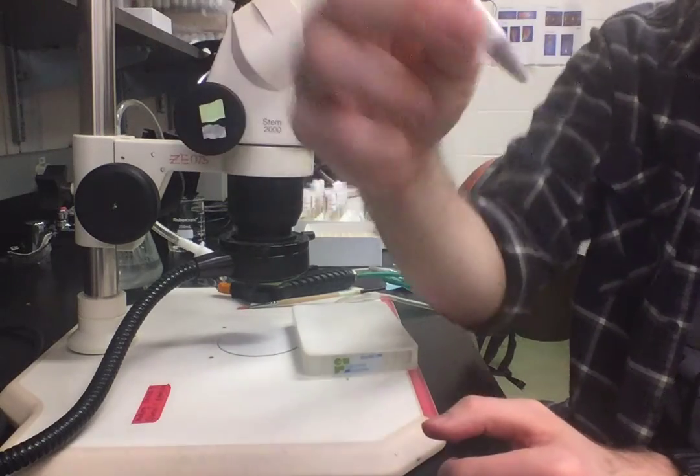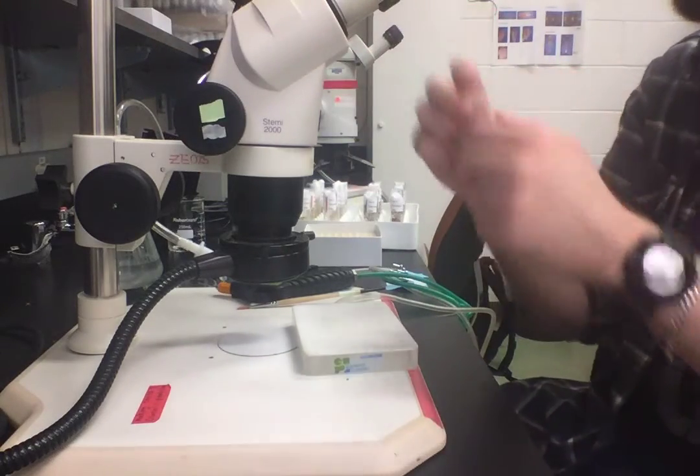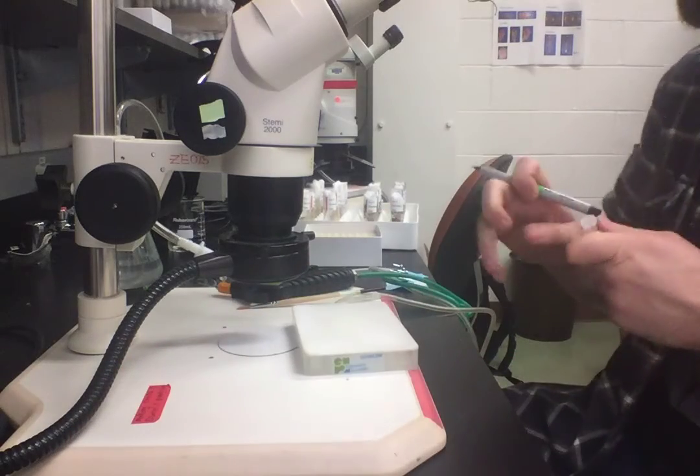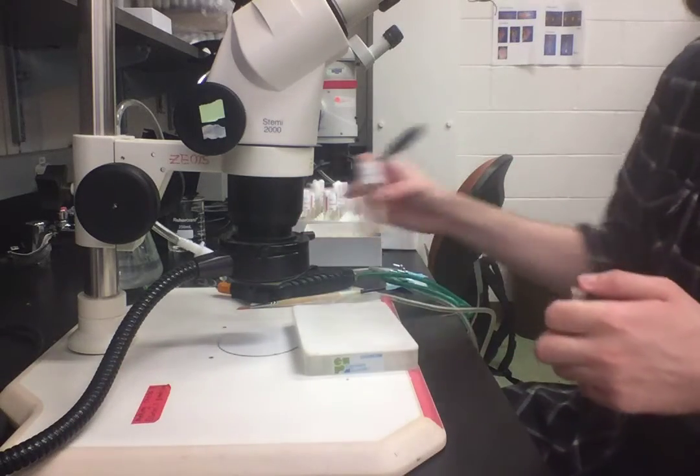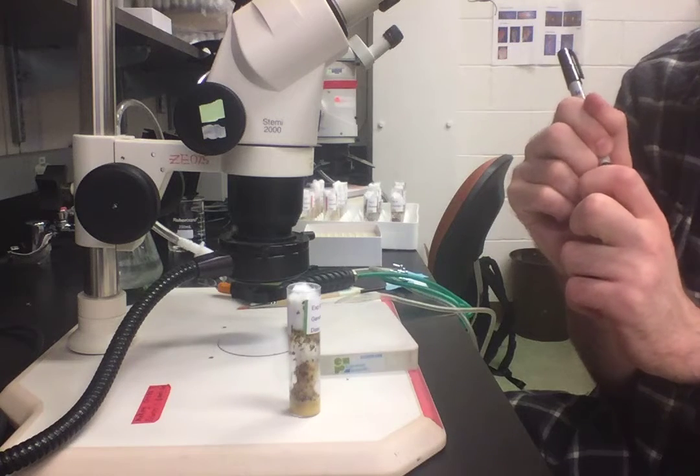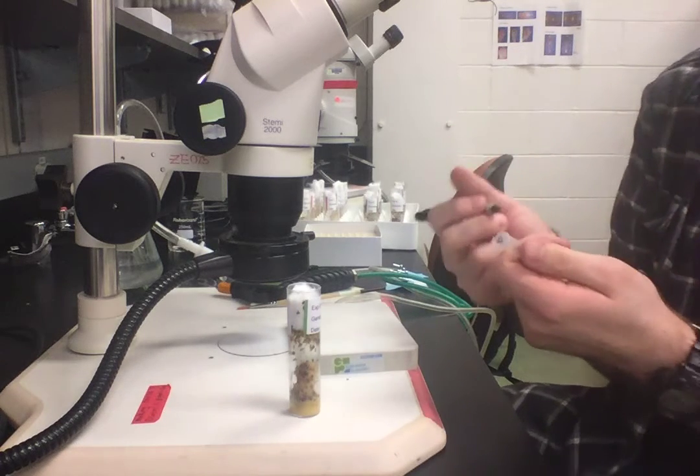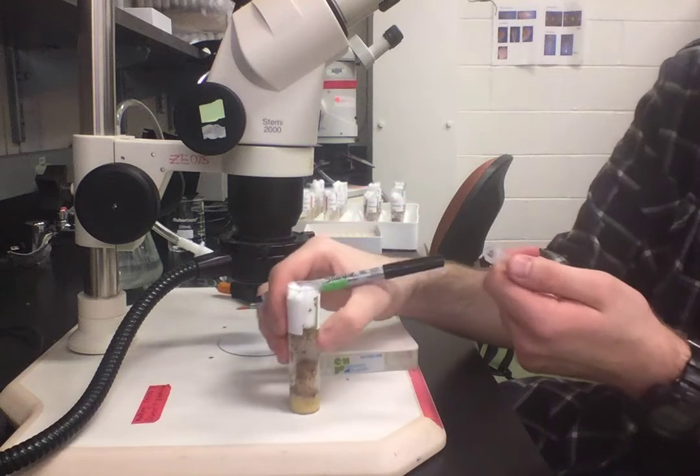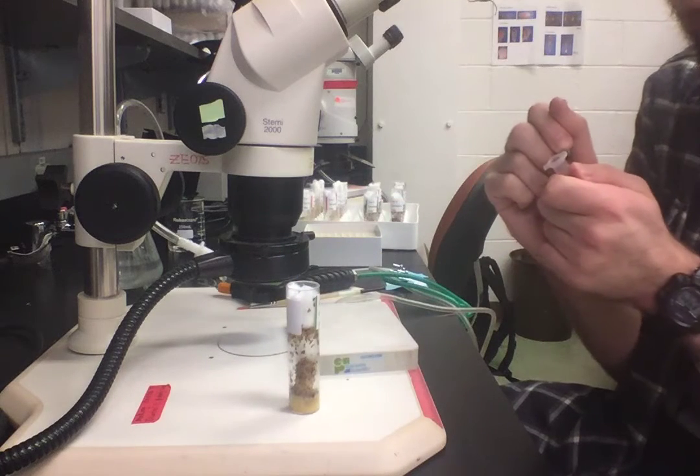You can see they're already awake and moving in here. Once you've got them in, you want to carefully label the vial, making sure that you don't miss any important information and you've put enough information on the vial that you'll be able to know exactly what these flies are.